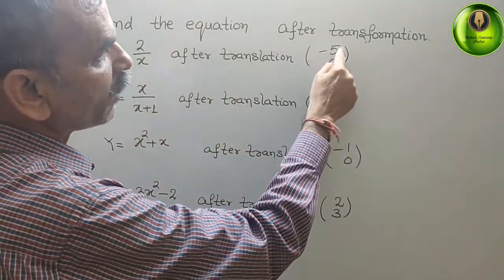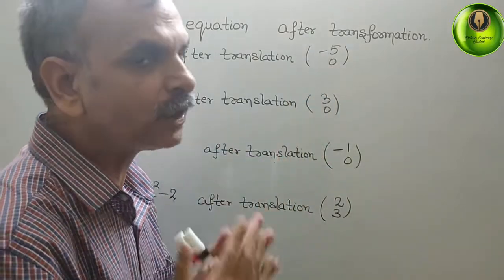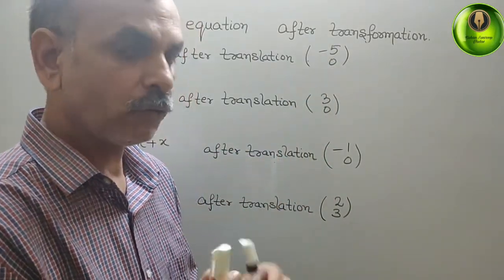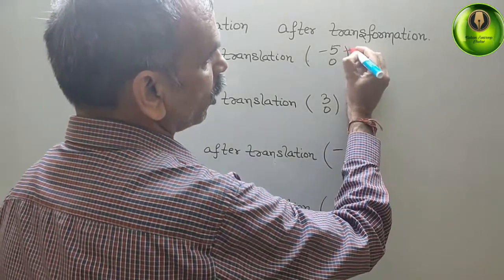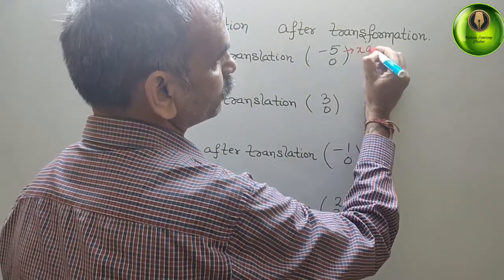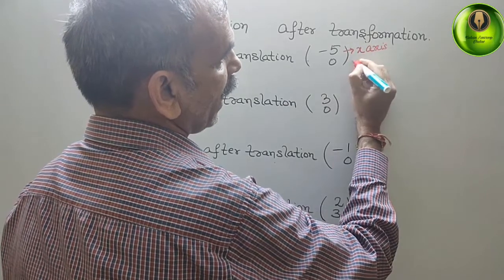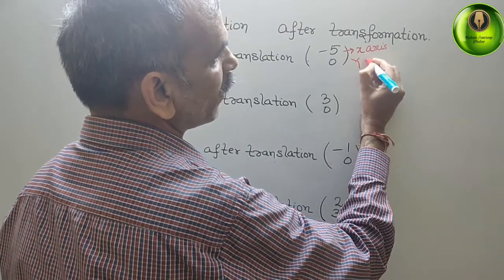They have given minus 5 and at down they have given 0. So first we should understand this. This belongs to your x-axis. Top and down belongs to your y-axis.